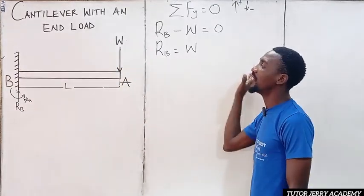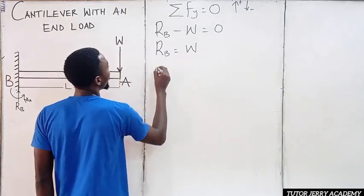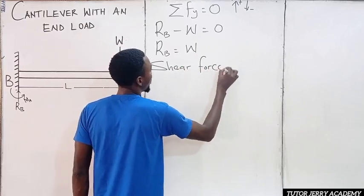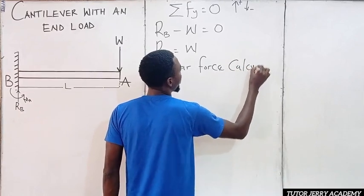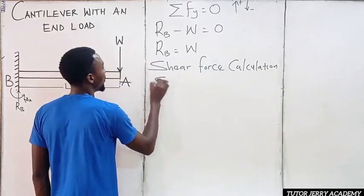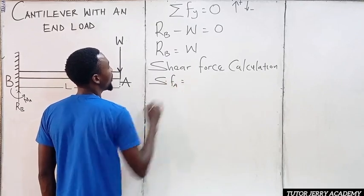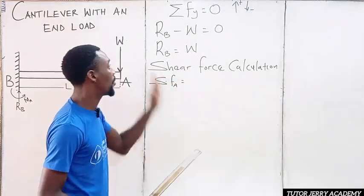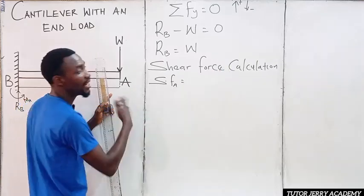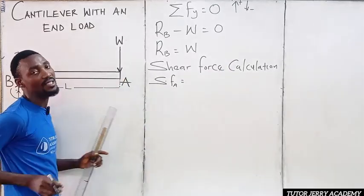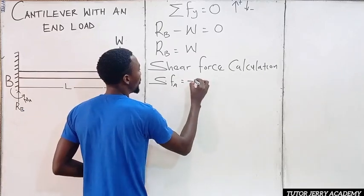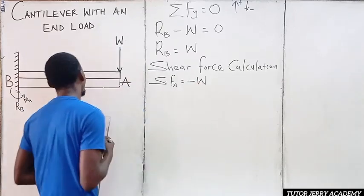Now let's do the shear force calculation. Starting with the shear force at point A — the condition still holds: upward force positive, downward force negative. If you start at point A and look to the right, the only force we have is W acting downward. So the shear force at point A is minus W.